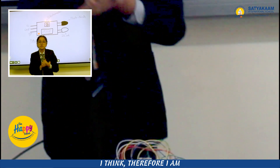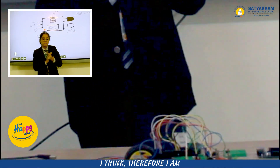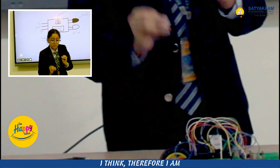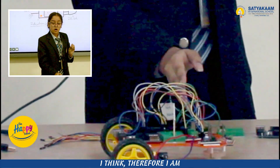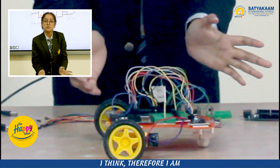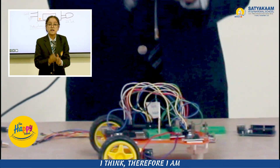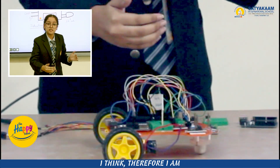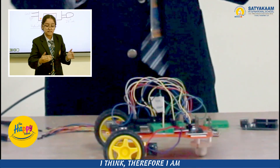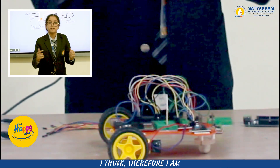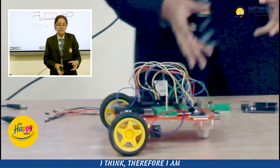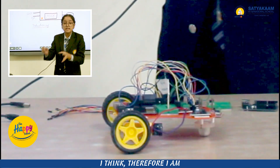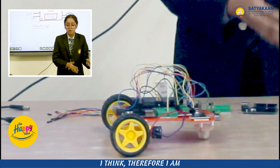When an object comes in front of the left IR sensor, the robot will start moving towards the left. And when an object comes to the right side of the IR sensor, the robot will start moving to the right. If an object stands in front of both sensors, the robot will keep moving forward.